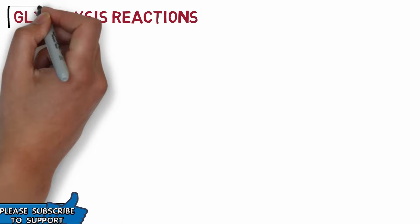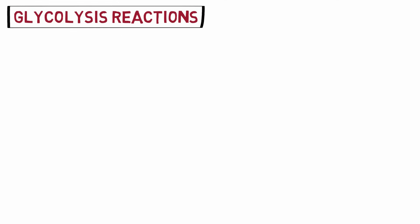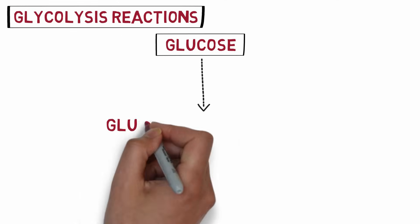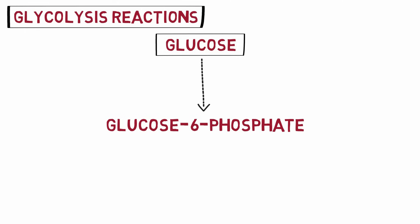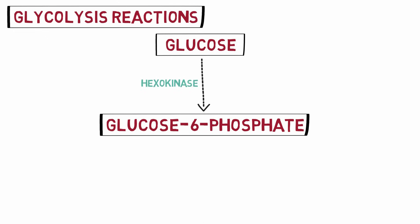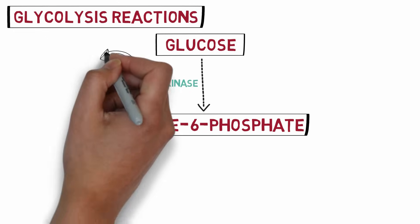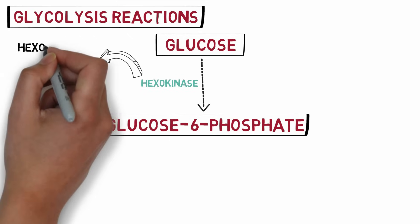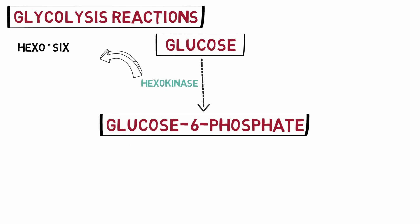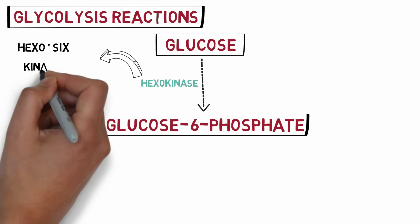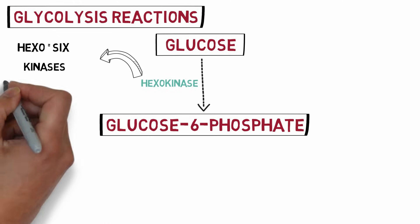Now let's look at the various reactions involved in glycolysis. It begins with a molecule of glucose that enters the cytosol. The first reaction is the conversion of glucose to glucose 6-phosphate, catalyzed by the enzyme hexokinase. The word hexo means six, denoting the six-carbon compound glucose, and kinases are a group of enzymes that catalyze phosphorylation reactions.